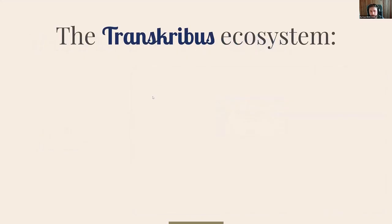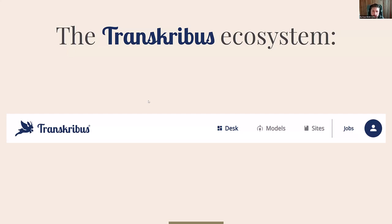Now let's have a look at what Transkribus is and how we understand it. We understand Transkribus as an ecosystem to unlock historical sources. As you can see here, this is basically the menu bar of the Transkribus web app, and we have three major parts: Transkribus Desk, Transkribus Models, and Transkribus Sites. These three workspaces are how we have structured Transkribus to help unlock and publish historical sources online. If you have any questions, please use the chat.